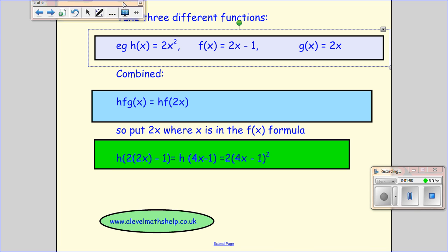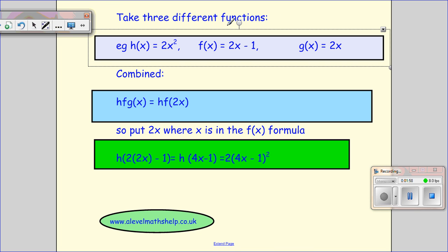Let's just try another one. And this time we've got three functions. So we've got h of x is 2x squared, f of x is 2x minus 1, and g of x is 2x. And I'm going to do three.